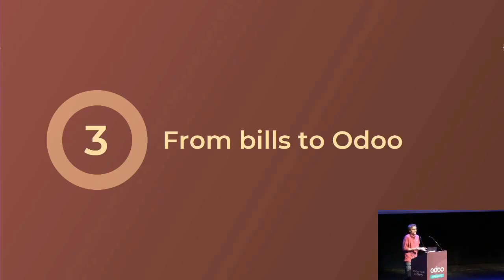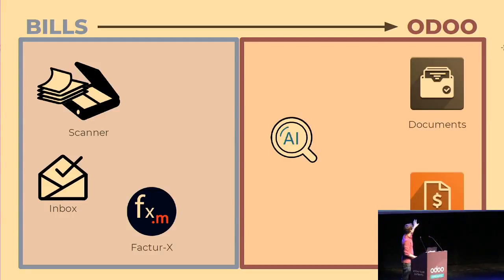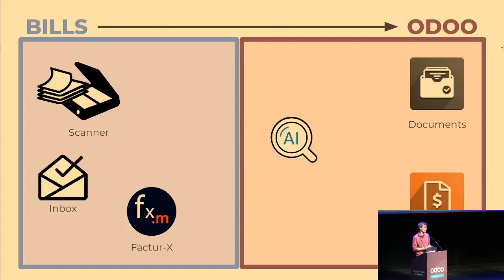Now let's look at what you can actually do with this. There are different flows you can use, and I'll try to represent this in a simple diagram. You have two environments. On the left side, you have everything that's not Odoo-related: paper bills you need to scan and submit, an inbox where you can receive PDF invoices from suppliers, and then Factor X — the file with data already structured and hidden behind the PDF.